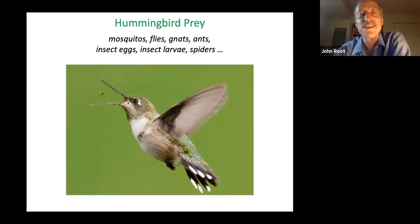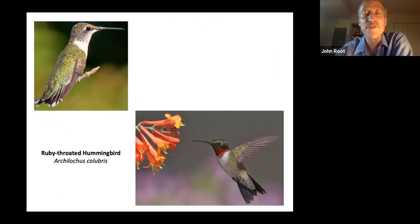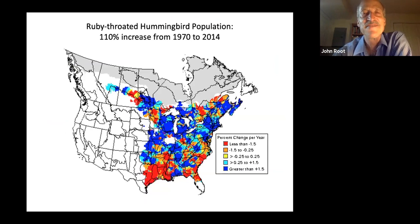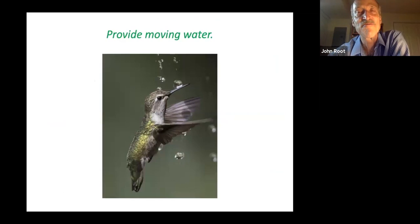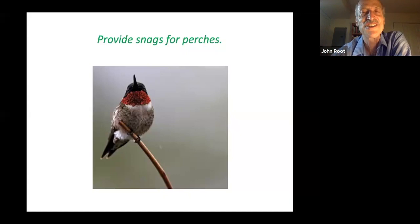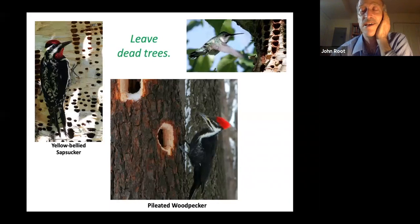Hummingbirds are beneficials because they are both predators and pollinators. They are extremely efficient hunters — they can pluck insects out of the air or find them elsewhere. The ruby-throated hummingbird is the only hummingbird you're likely to see here in New England. We don't need to be concerned about their population — they've doubled in size in the last half century. But people love hummingbirds, and in order to attract them to your property, provide moving water, a place for them to rest, and dead trees where holes drilled by woodpeckers have sap that attracts insects which the hummingbird can help itself to.